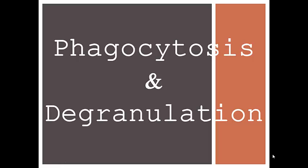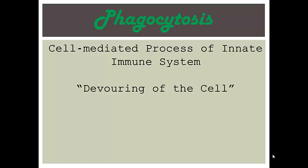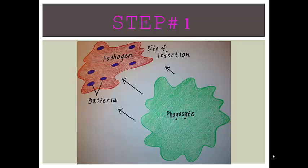Phagocytosis and degranulation. Phagocytosis is a cell-mediated process of the innate immune system. It is referred to as the devouring of the cell.